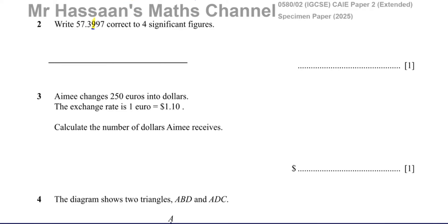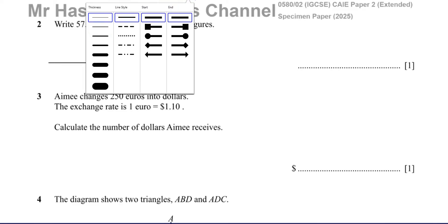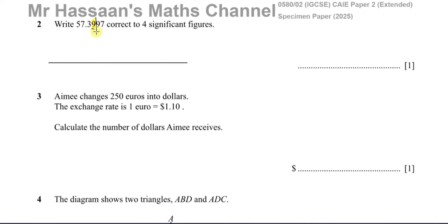So what you do, there's different ways that people deal with this question. They would draw a line after this number and say the number after it is between five and nine. So therefore the number before it is going to increase. As it's between five and nine, this is going to increase by one. So you have 57.3, and this nine is going to become a 10.